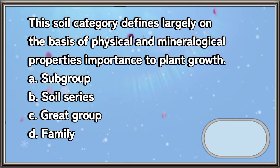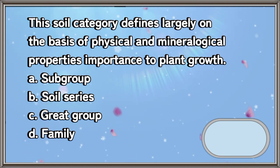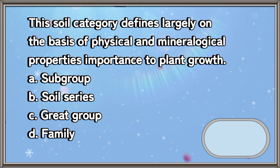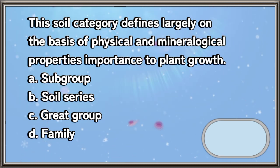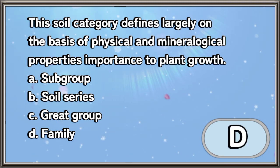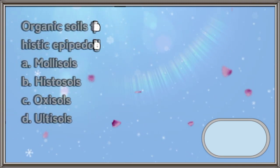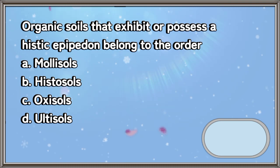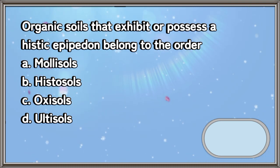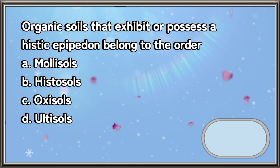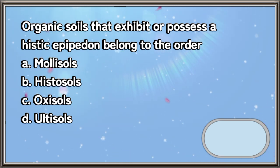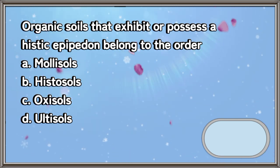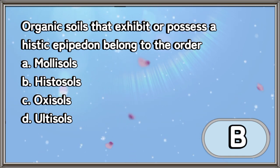This soil category is defined largely on the basis of physical and mineralogical properties important to plant growth: a) subgroup, b) soil series, c) great group, d) family. The answer is letter D. Organic soils that exhibit or possess a histic epipedon belong to the order: a) mollisols, b) histosols, c) oxisols, d) ultisols. The answer is letter B.